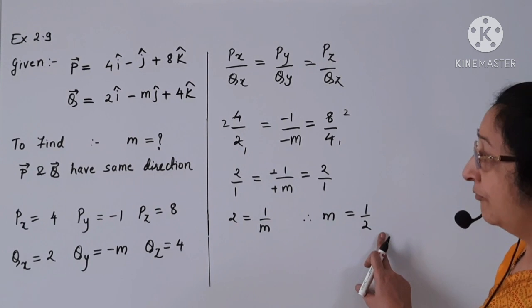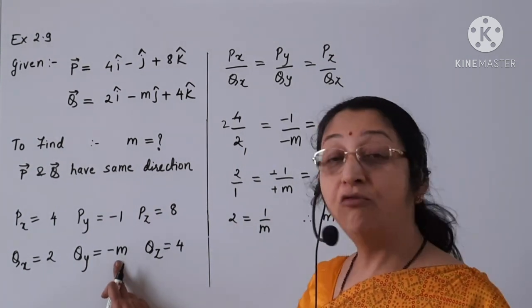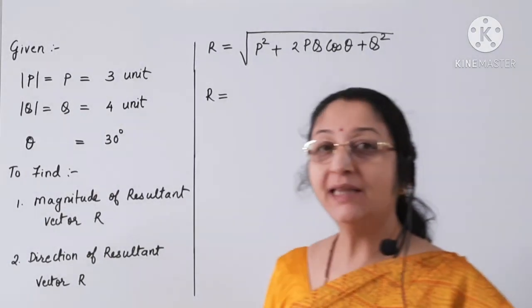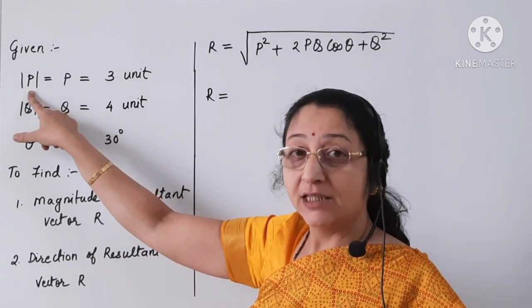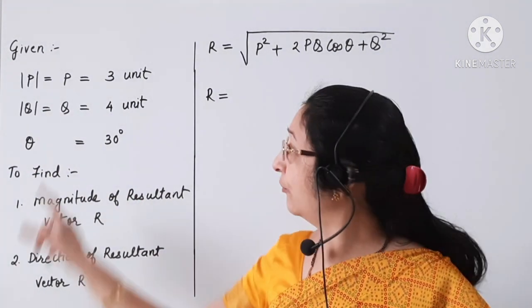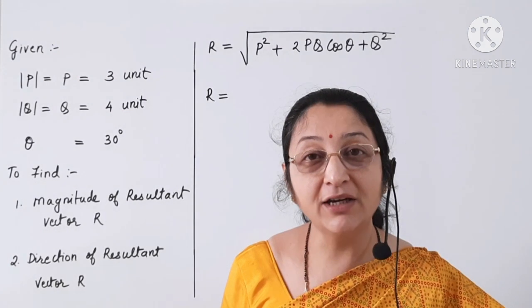So in this way we have found the y-component of vector q. The next problem: vector p and vector q have magnitudes 3 units and 4 units respectively. Vector r is the resultant of vector p and vector q. Find the magnitude and direction of vector r when the angle between vector p and vector q is 30 degrees. The magnitude of p is 3 units, magnitude of q is 4 units, and the angle between them is 30 degrees.